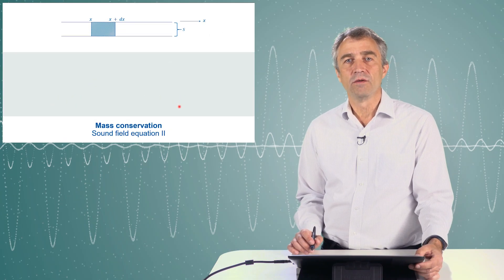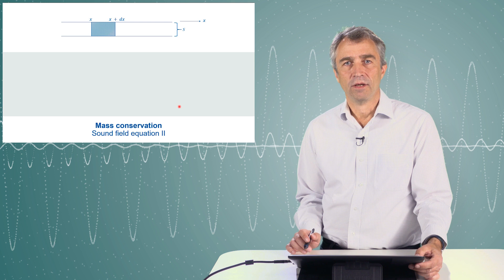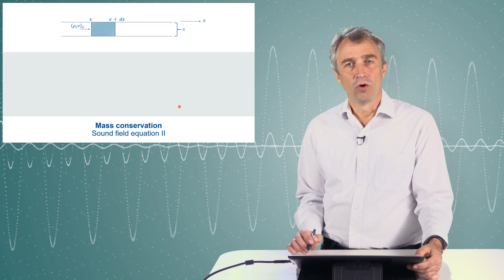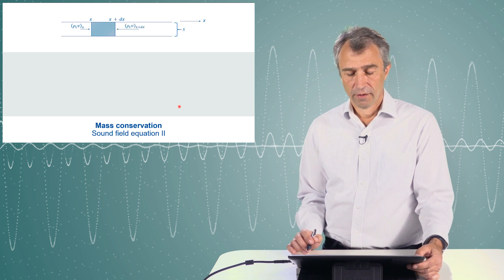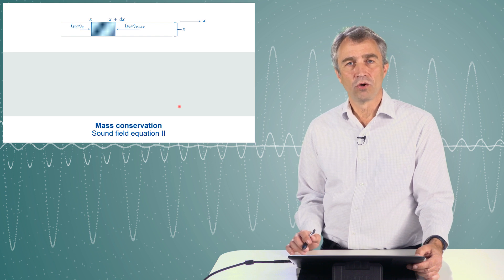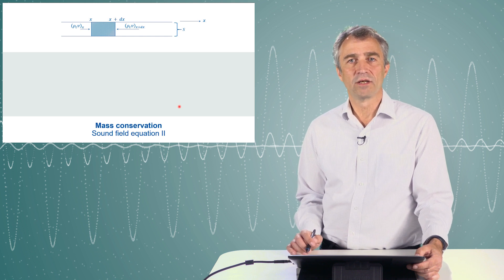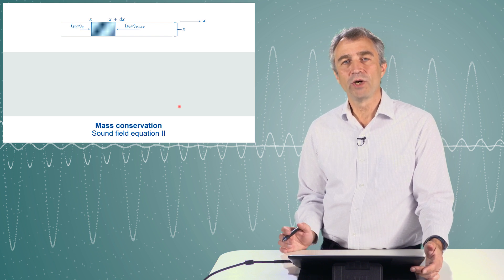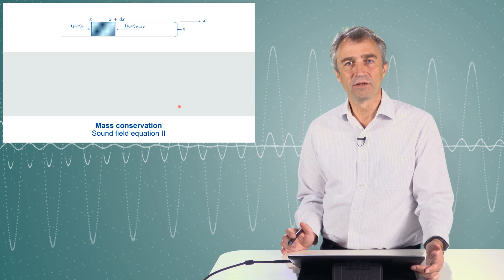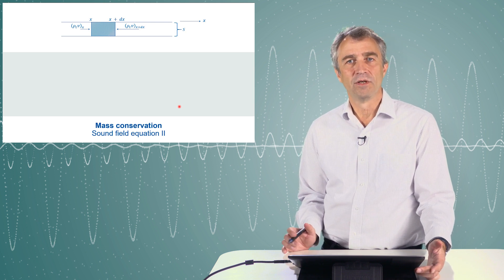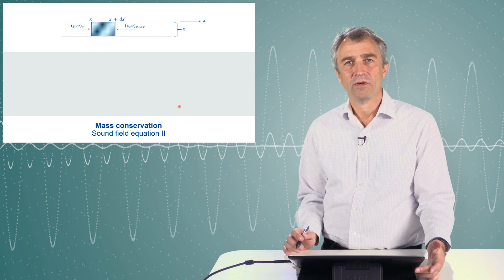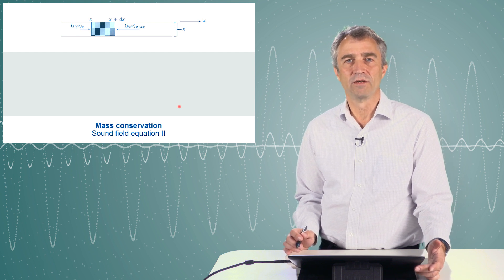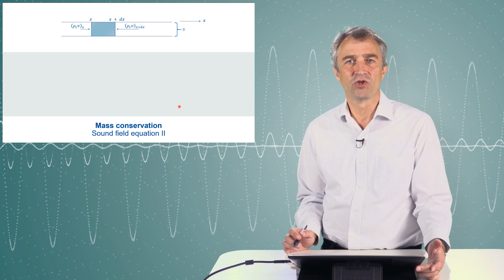The second sound field equation means mass conservation. We take again a small portion of our medium, but now we consider a mass flow on the left side and on the right side. The mass flow is not zero in total, so you can consider that on the right side there is a little different mass flowing in than on the other side flowing out. You can compare this with a situation in a local city bus where there is a certain amount of people in the bus. On the next bus stop some people get out, on the following bus stop more people get in, so the density, which means the compactness of people sitting in the bus, is changed.